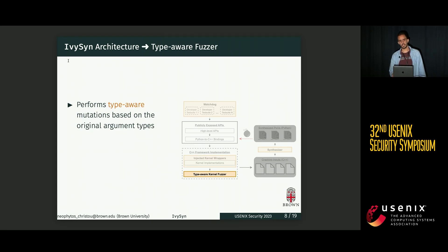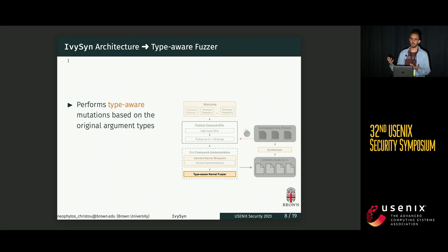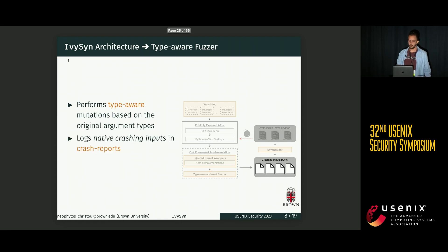Since we injected these wrappers at the native level, where we have strong static type information, the fuzzer itself is able to fuzz the kernels by performing type-aware mutations based on whatever the original argument types were. The kernels are fuzzed, and whenever a crash is detected, the offending inputs causing the crash are logged into crash reports.